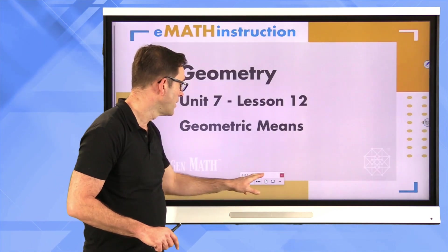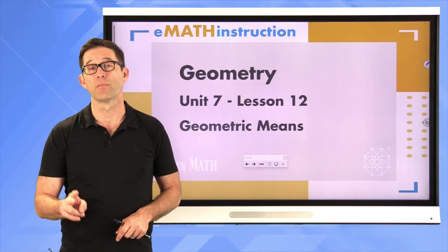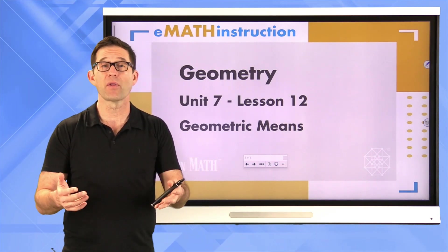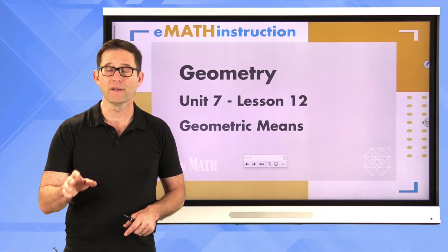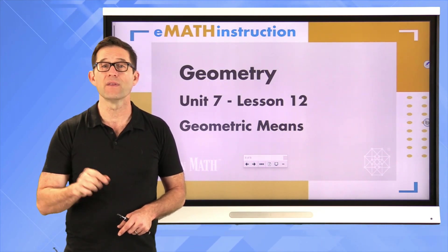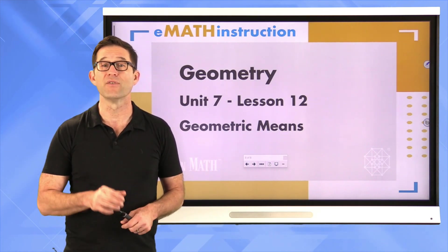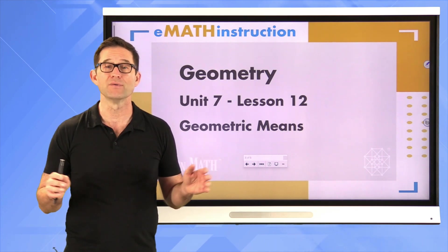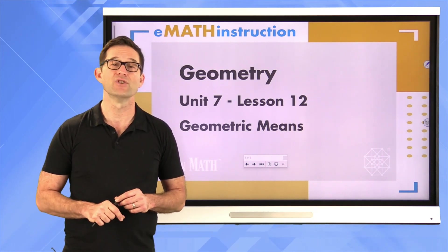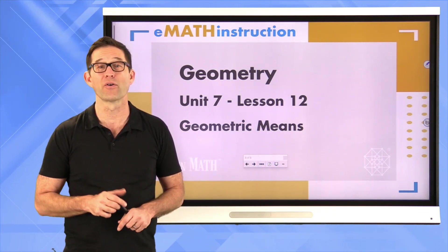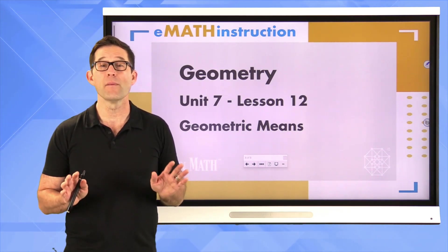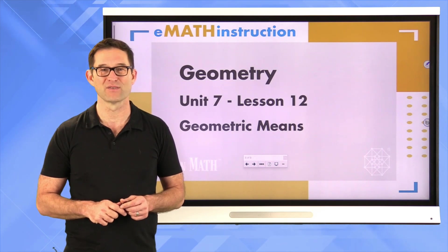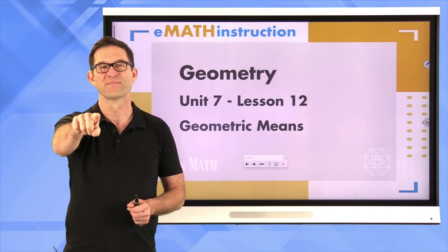Let's wrap up. We introduced a brand new term today: the geometric mean of two numbers — the idea that there are different means other than just adding two numbers and dividing by 2. The geometric mean is found by multiplying two numbers and finding the square root. The most important consequences were two theorems: the altitude drawn to the hypotenuse of a right triangle is the geometric mean of the two segments of the hypotenuse, and either leg of the original right triangle is the geometric mean of the hypotenuse with the adjacent hypotenuse segment. These will become very important in our next lesson when we prove the Pythagorean theorem. Thank you for joining me — my name is Kirk Weiler, and until next time, keep thinking and keep solving problems.